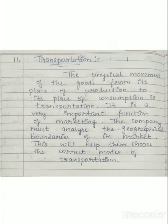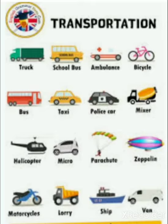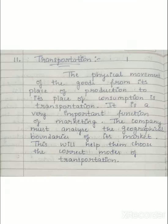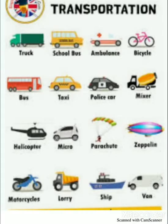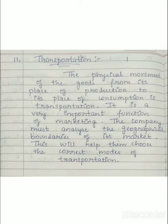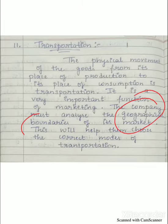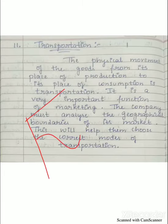The next function is transportation. Selecting proper transportation is also one of the major functions of marketing. Transportation is the physical movement of goods from the place of production to the place of consumption. The company must analyze the geographical boundaries of its market, which helps them choose the correct modes of transportation. Various modes of transportation are now available, and which mode is suitable depends on the geographical boundary analysis.